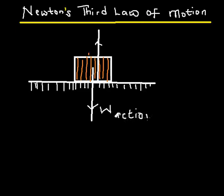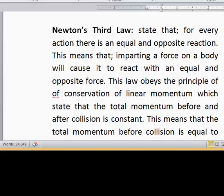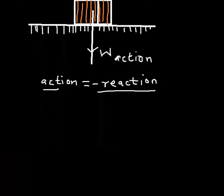The force acting downward — the weight — is what is called action, while the opposite force that the surface gives to withstand the weight of the object is what is known as reaction. So according to Newton, action is equal and opposite to reaction, meaning action equals minus reaction. For every action there is an equal and opposite reaction.